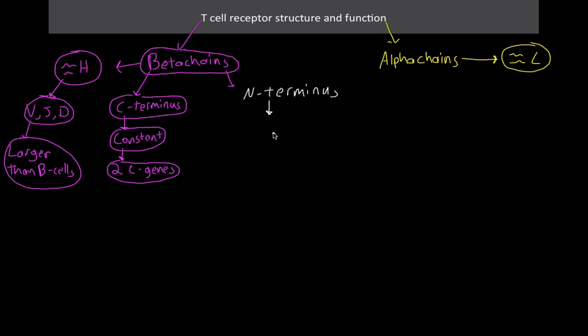The N terminus, just like when we talked about the B cell receptors or immunoglobulins, contributes to the variable domains. These variable domains have the antigen binding sites associated with them.